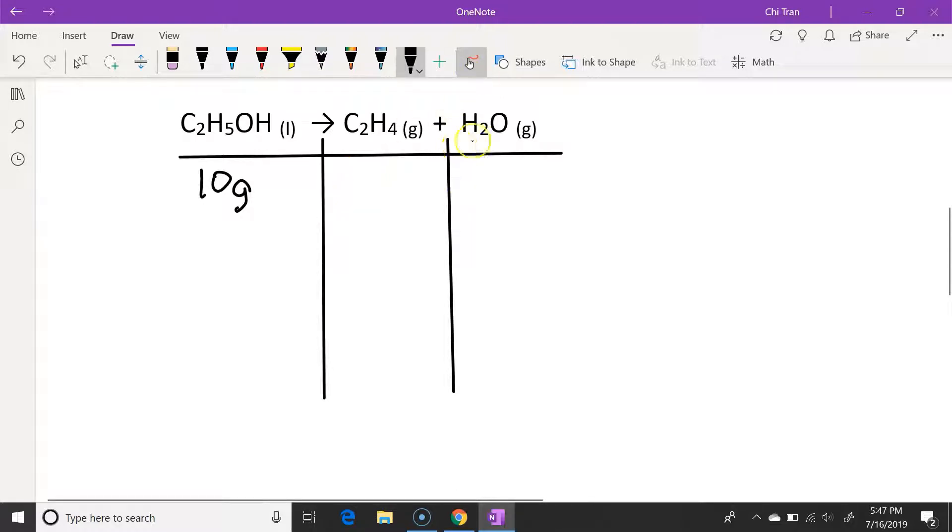To answer the question we can draw out the table like so. So it is given that there's 10 grams of ethanol, experimental mass of 2.2 grams of ethene, and we can simply cross out water as it's not in the question.